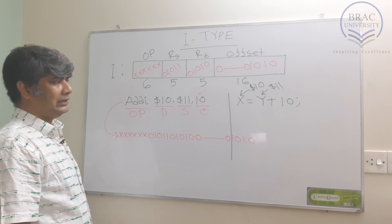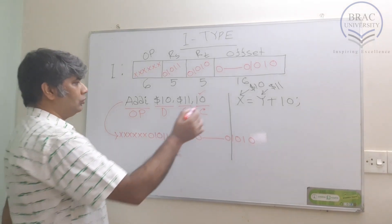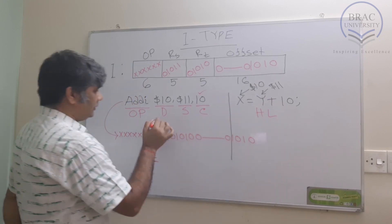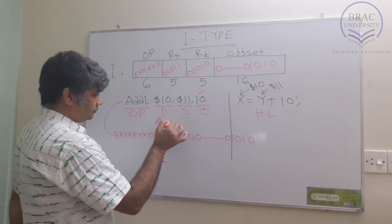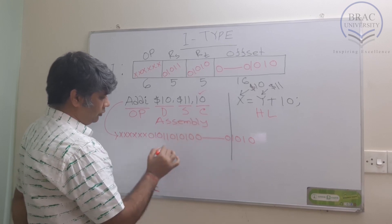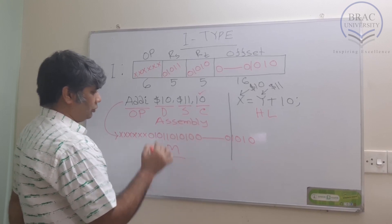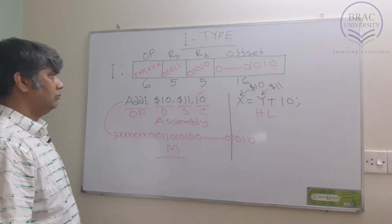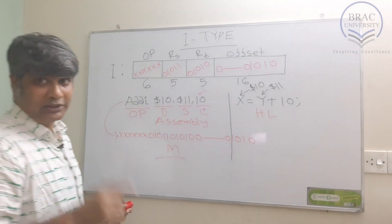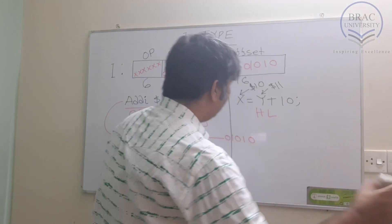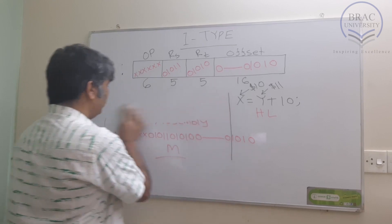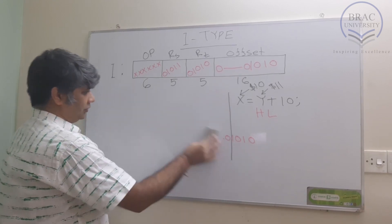So this is our machine code for the ADDI instruction, which is our I-type arithmetic instruction. To summarize: the high-level code is x = y + 10, the assembly code is ADDI 10, 11, 10, and this is our machine code.